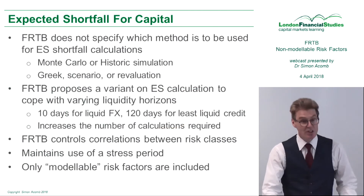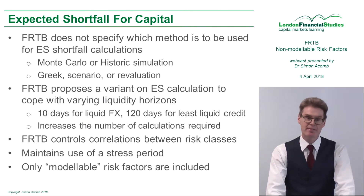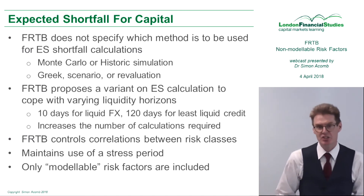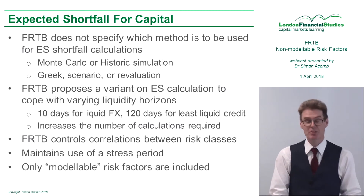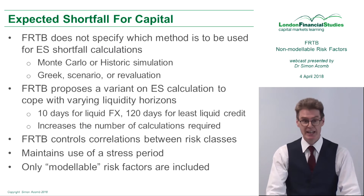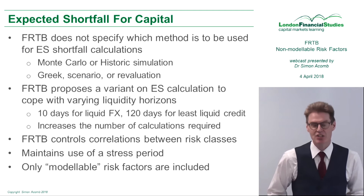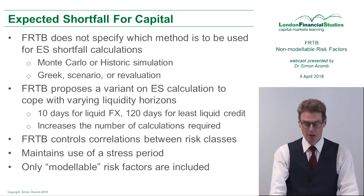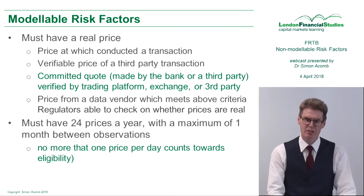The difference between these two concepts is shown on this slide. A key thing about the Fundamental Review of the Trading Book is that it doesn't specify which method has to be used for expected shortfall calculations. It gives market practitioners a very wide choice: you can either use historical simulation, which is what most people do — taking a past history of the underlying risk factors — or Monte Carlo methods.